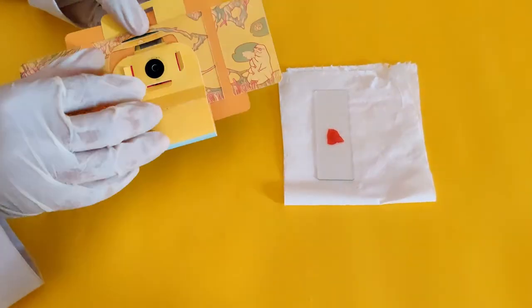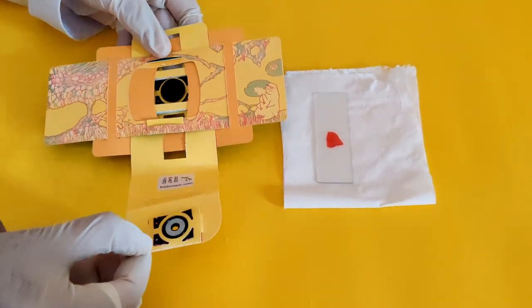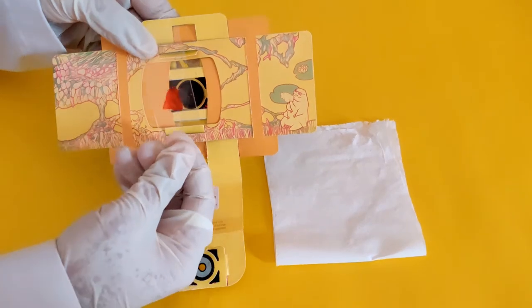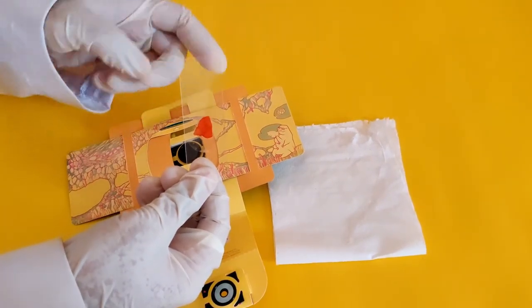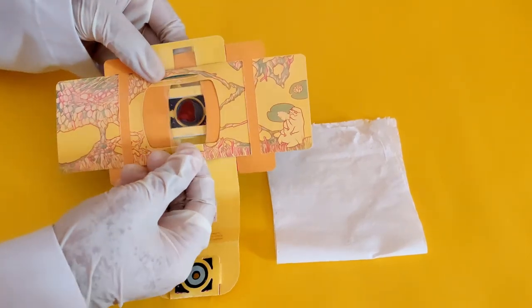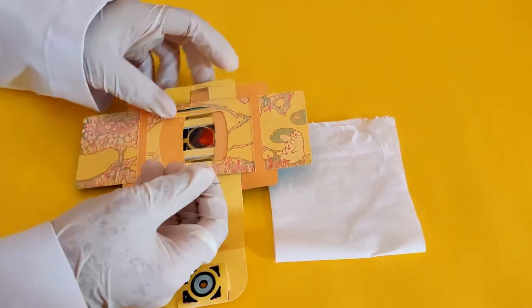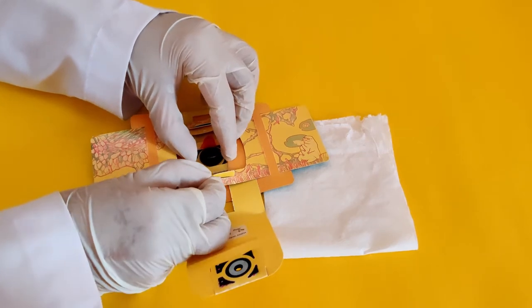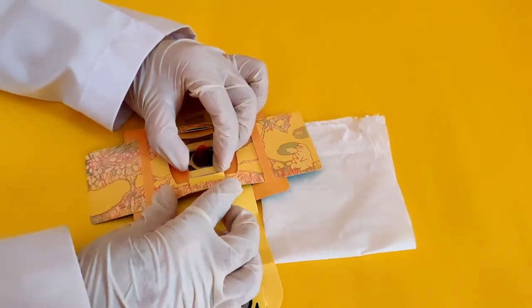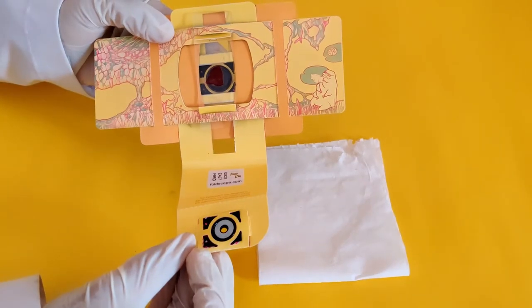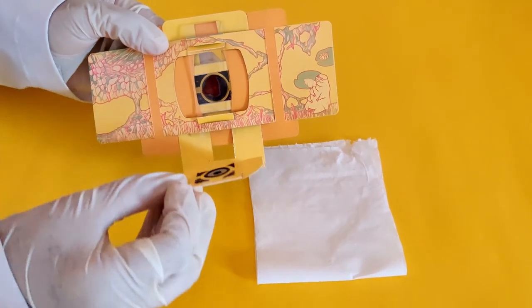Flip the foldscope to the yellow side. Flip the glass slide such that the side where the sample is mounted is facing the lens in the foldscope. Insert the glass slide into the two slits in the sample stage of the foldscope. Close the flap of the lens stage of the foldscope.